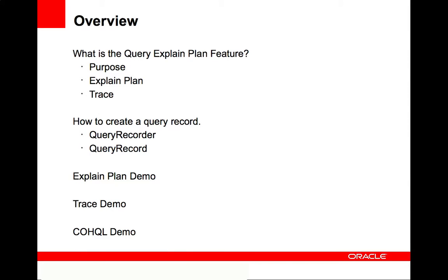In this presentation, I'm going to cover the following. I'm going to give a brief overview of the query explain plan and trace feature — what its purpose is and what the difference between explain plan and trace is. I'll show you how to create a query record and introduce a couple of new Coherence APIs. Then I'll show you a quick demonstration of the feature, including the use of the query explain plan feature with the Coherence query language.